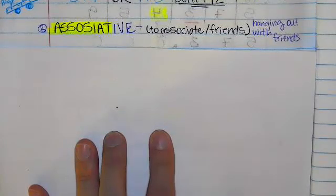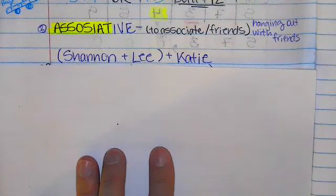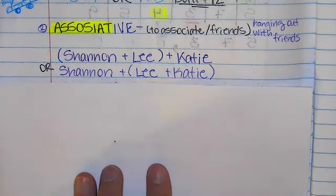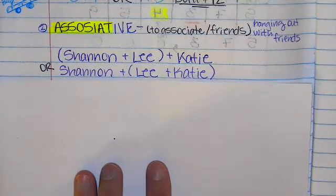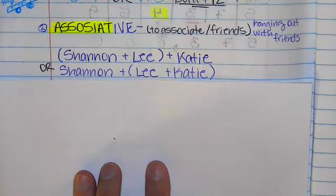The second property is the associative, like to associate, like when you have friends hanging out. I explained that like I have two friends Lee and Katie. So me and Lee can be hanging out and then Katie can join us later and we're still all friends. It's the same amount of friends. Or Lee and Katie can be hanging out. You see those parentheses, it's grouping those people together or those numbers together first. Lee and Katie can be hanging out and then I can join later. It doesn't matter. We're still all friends. It's the same amount of friends.